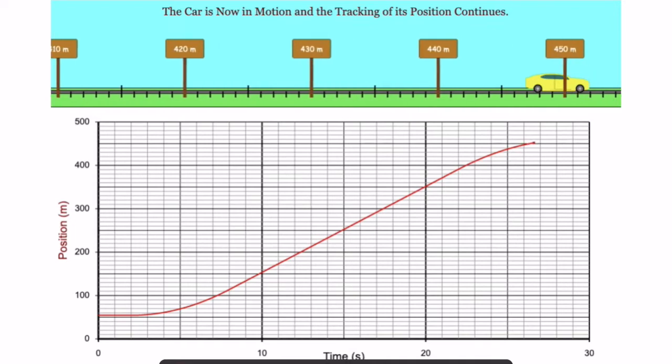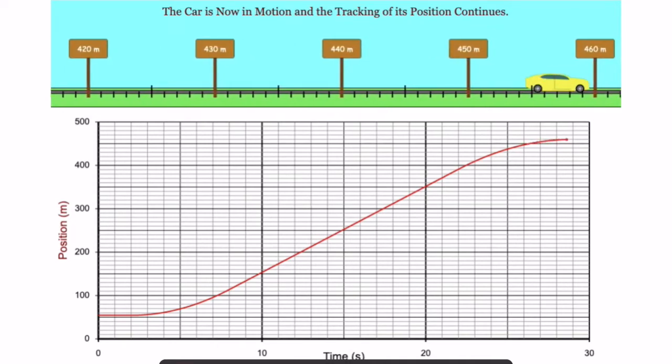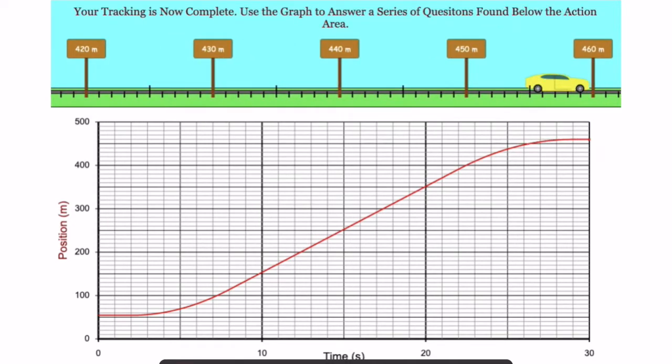Now you can see the slope starting to get smaller, smaller, and eventually you could see the slope hitting zero when the car comes to rest. So we have the car stopped.